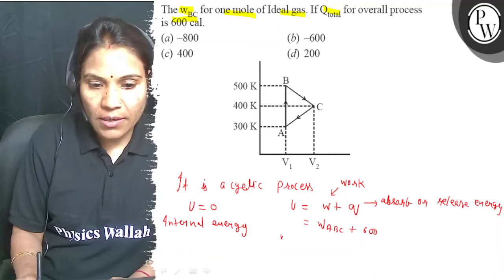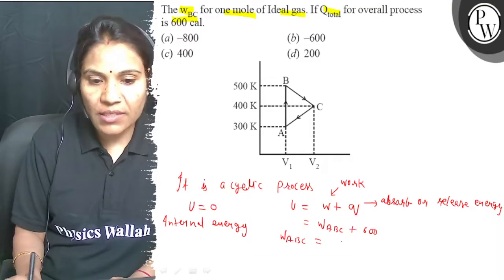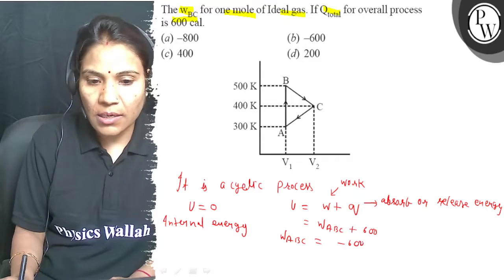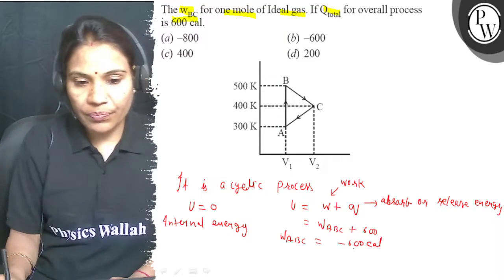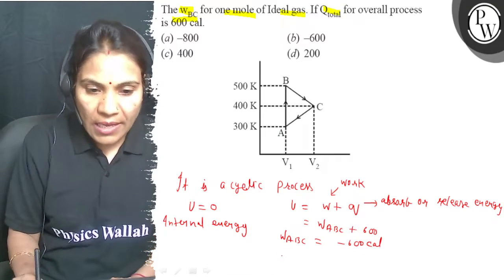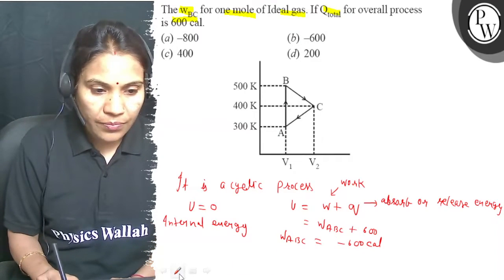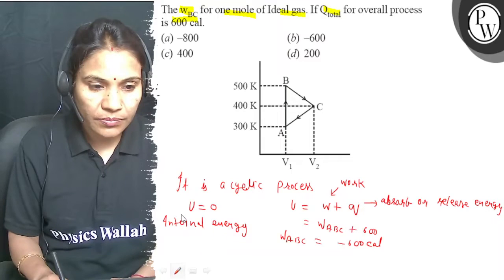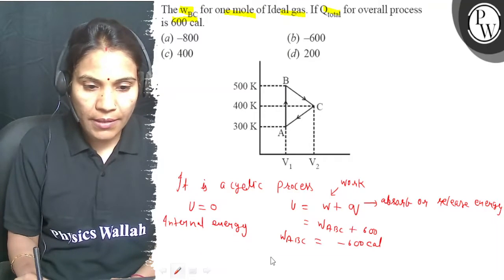From here, W ABC is equal to minus 600 calories. Total work hoga minus 600 calories.